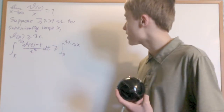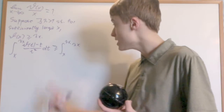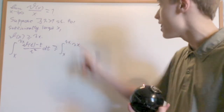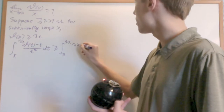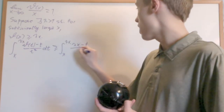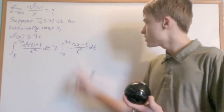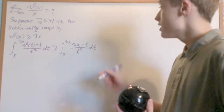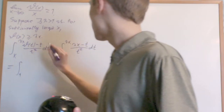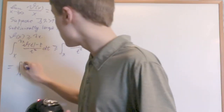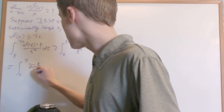Because θ(x) is non-decreasing — it doesn't decrease over any interval — I can replace θ(t) with θ(x) ≥ λx, giving the integral from x to λx of (λx − t) over t² dt. Using a substitution, this is quite easily seen to be equal to the integral from 1 to λ of (λ − t) over t² dt.